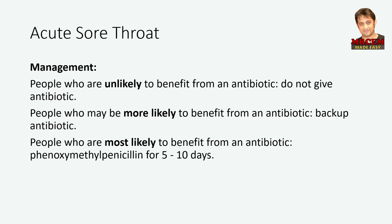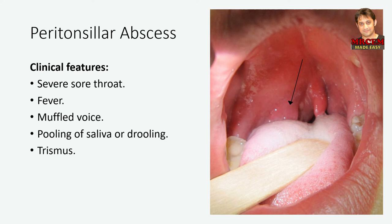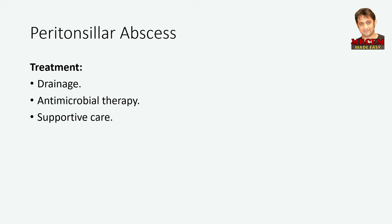Let's move to peritonsillar abscess. Peritonsillar abscess usually occurs in the superior pole of the tonsil and is often polymicrobial. The typical clinical presentation is a severe sore throat, usually unilateral, fever, and a muffled voice which is called hot potato voice. Pooling of saliva or drooling may be present. Trismus, related to irritation and reflex spasm of the internal pterygoid muscle, occurs in nearly two-thirds of patients. The treatment of peritonsillar abscess is by drainage, antimicrobial therapy, and supportive care.